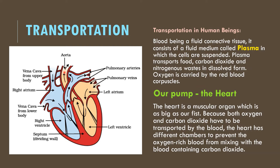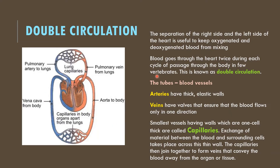Once the oxygenated blood is collected in the left ventricle, the valves are closed and it is pumped to the aorta, which is one of the biggest arteries, to all parts of the body. So the oxygenated blood is carried by the aorta to all parts of the body. The blood enters the heart twice during each cycle of passage through the body in vertebrates like mammals and birds.